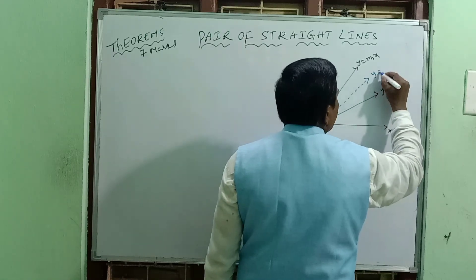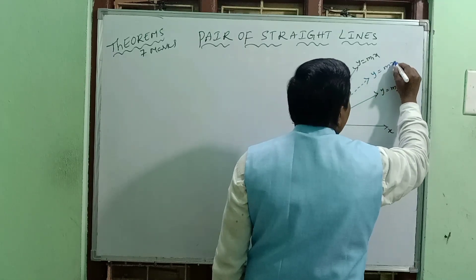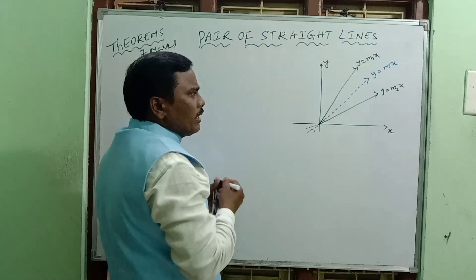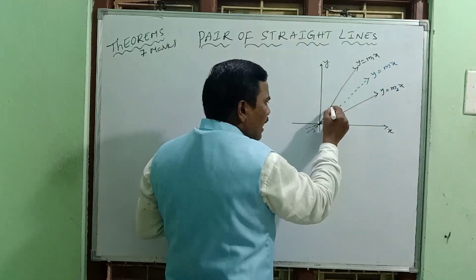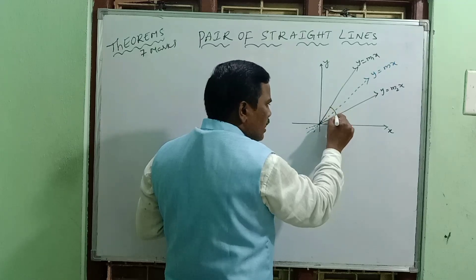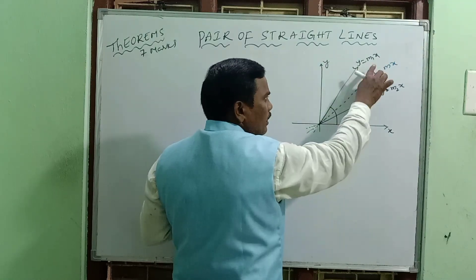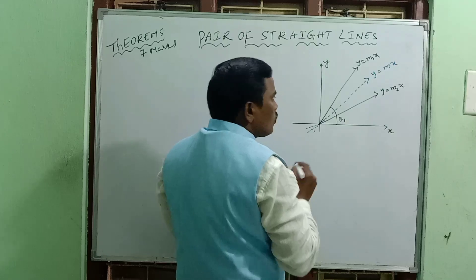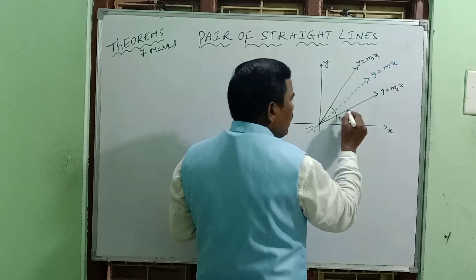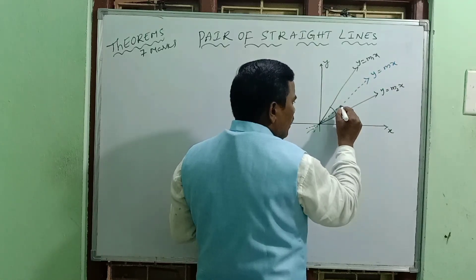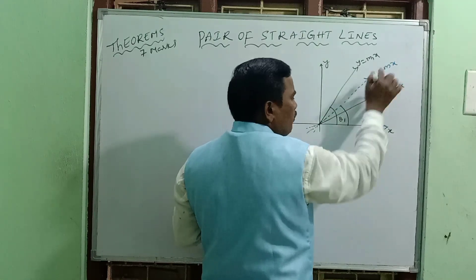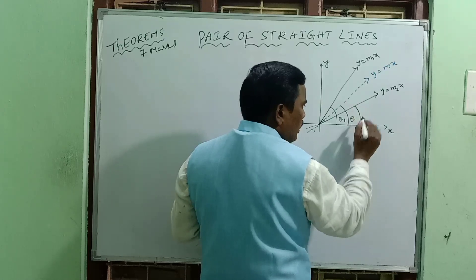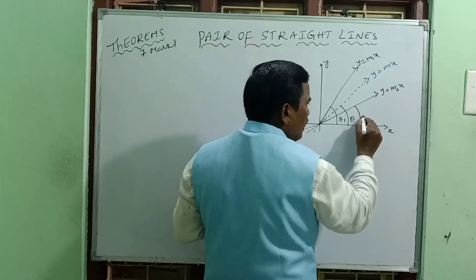The angular bisector is the line y equal to mx. Here, m1 is the slope of the first line, with inclination theta1. m2 is the slope of the second line, with inclination theta2. The angular bisector line has slope m and inclination theta.